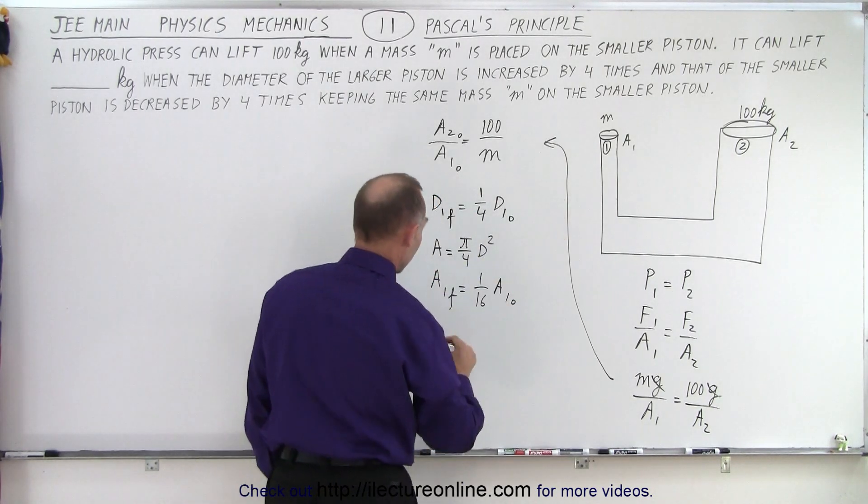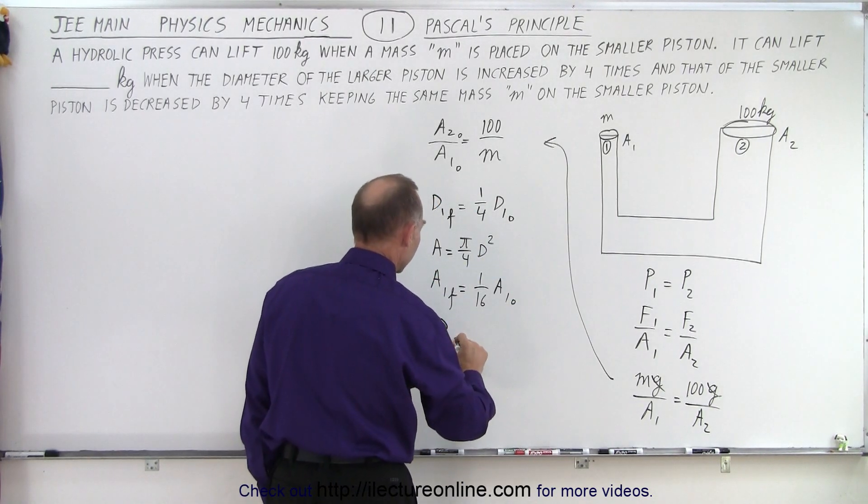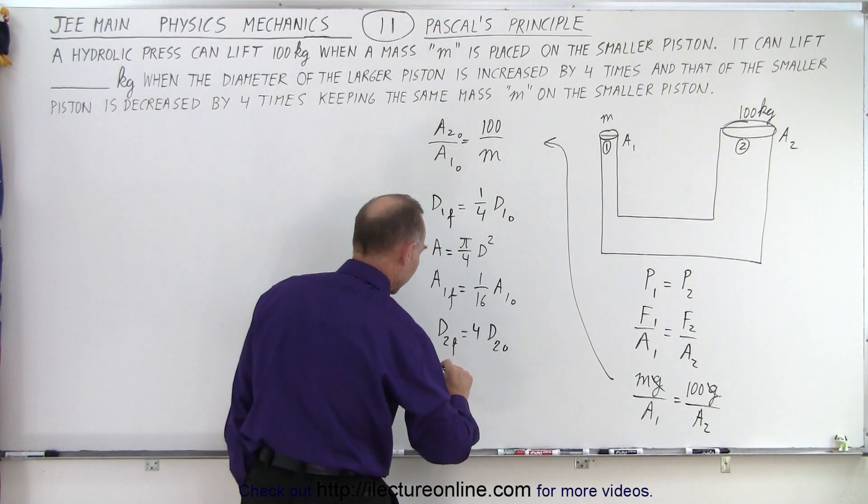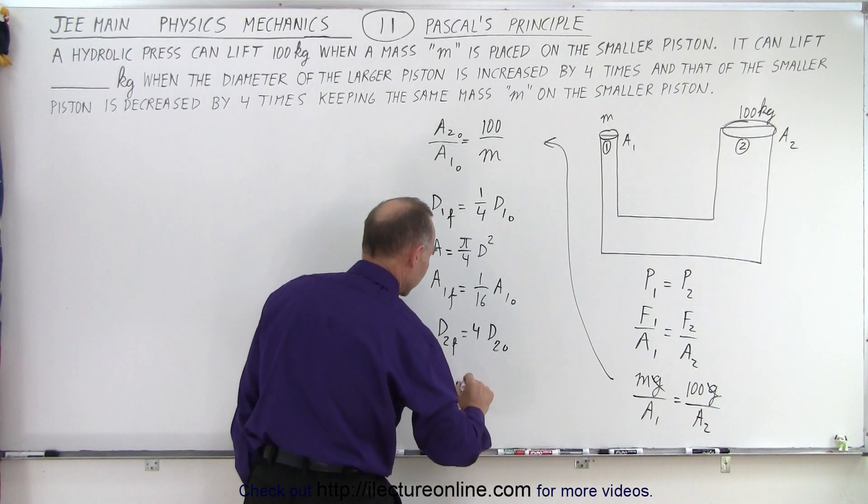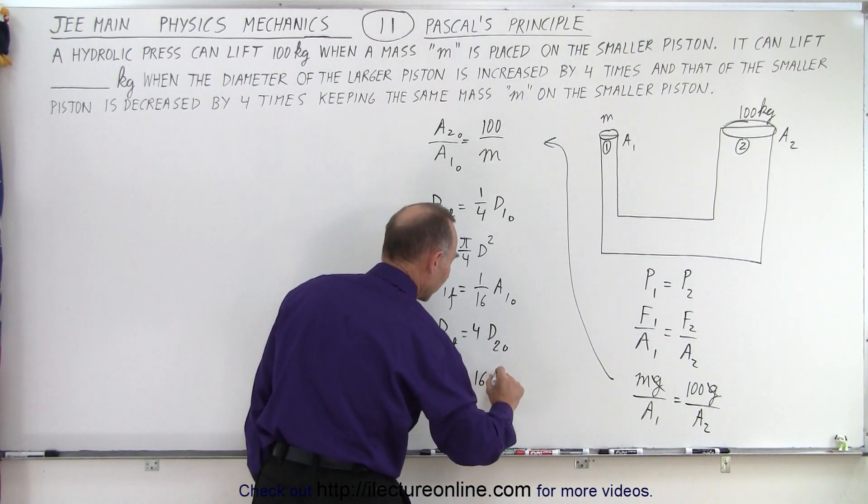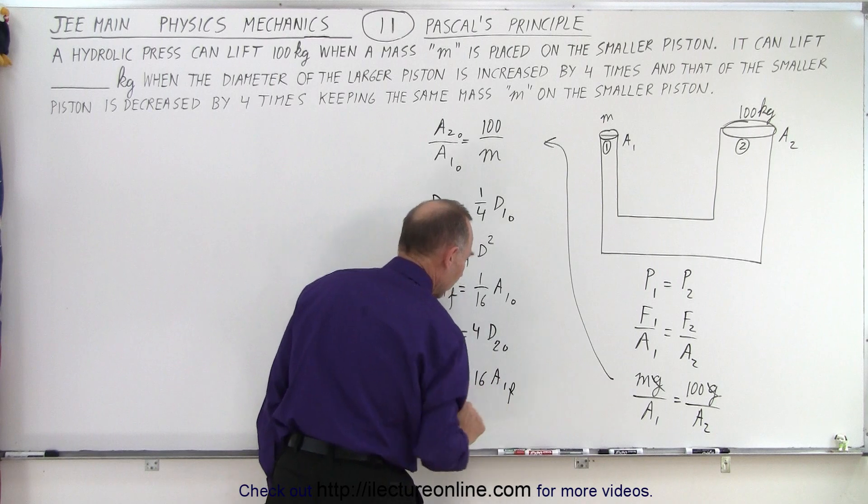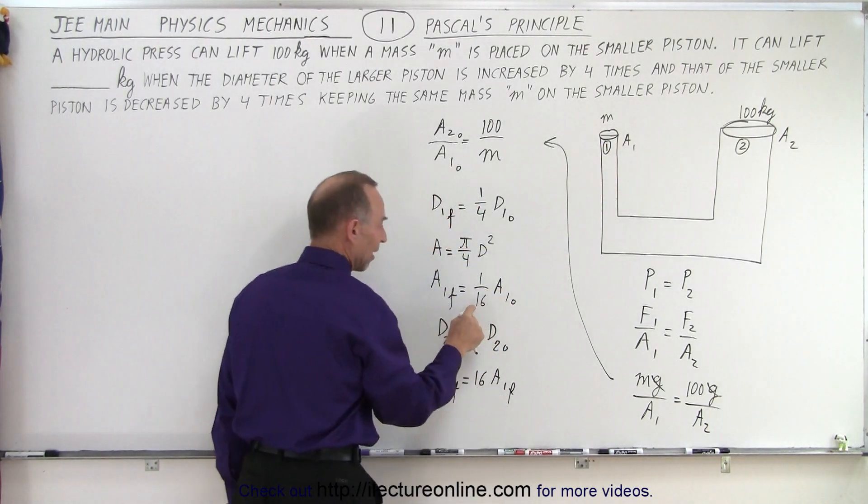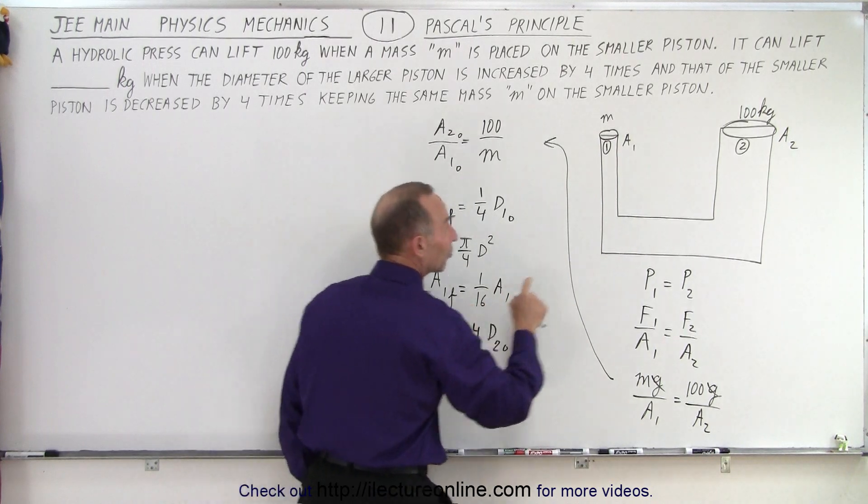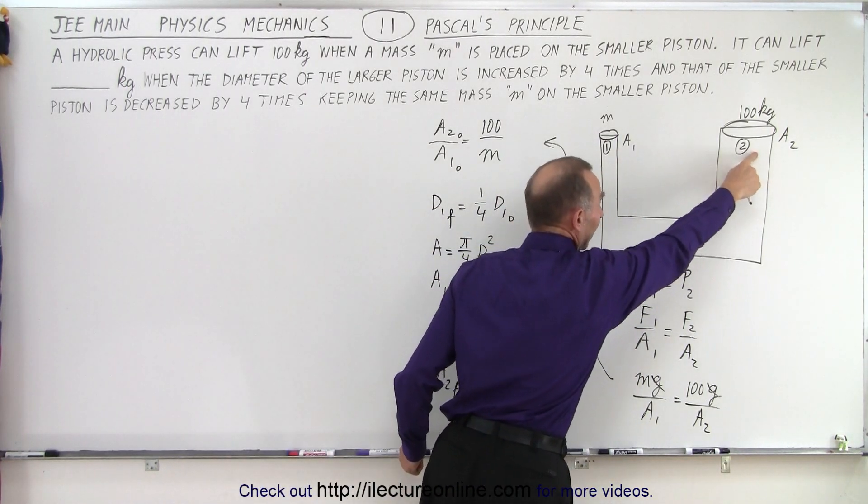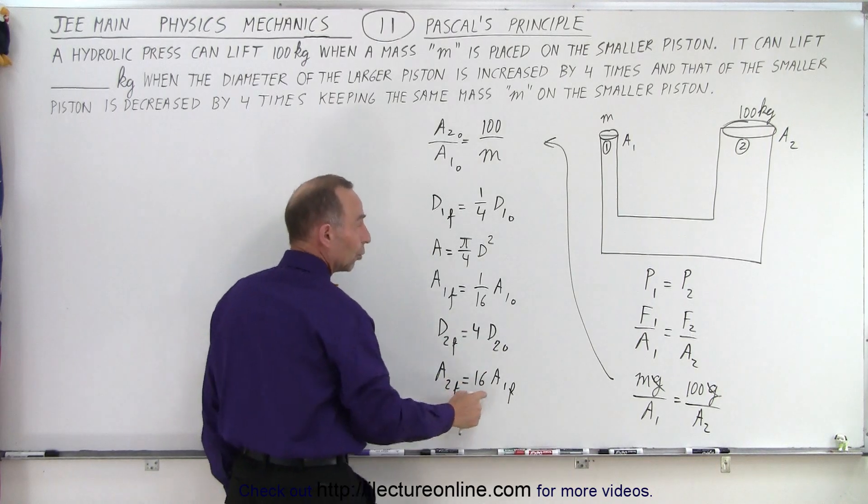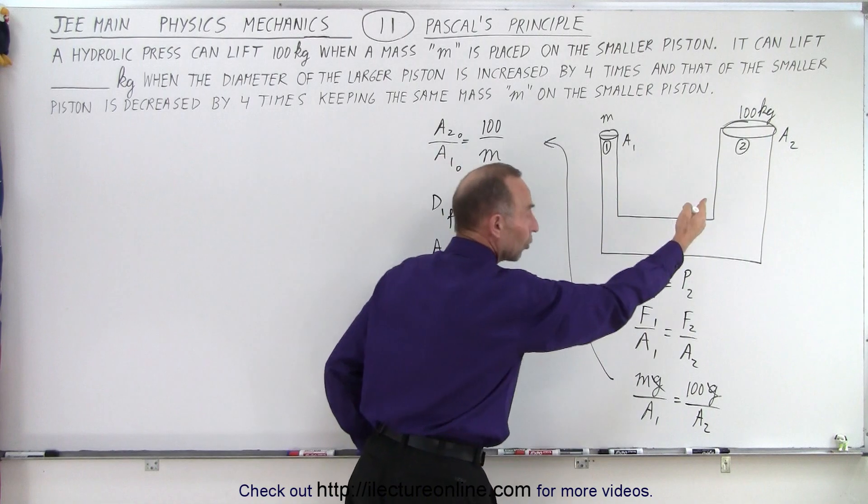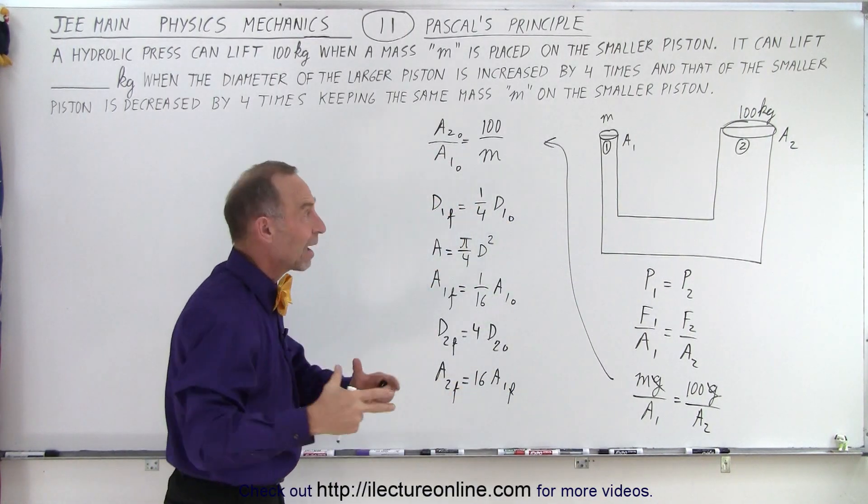On the other side, we can say that D2 final equals 4 times D2 initial, and so, therefore, we can say that area 2 final equals 16 times area 2 initial. So, we can then say that since we reduce the cross-sectional area here by a factor of 16, that allows us to lift 16 times as much mass or weight. And since we're increasing the area here by a factor of 16, we can also increase the amount of mass by 16.